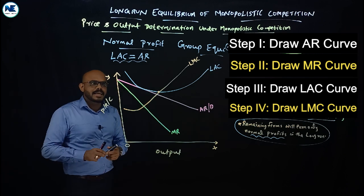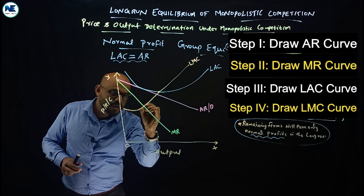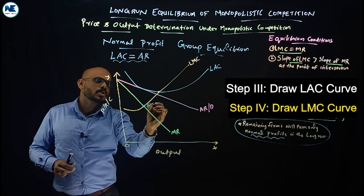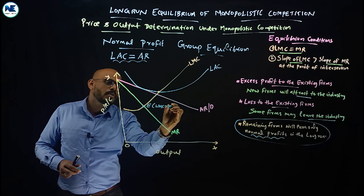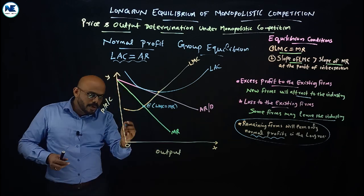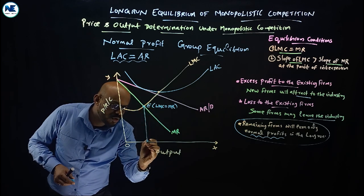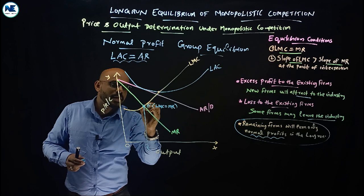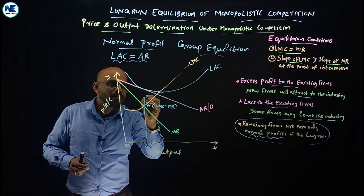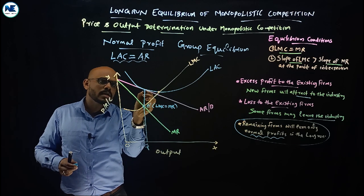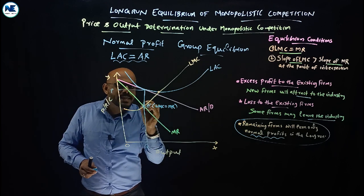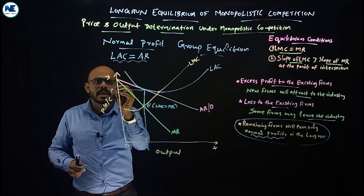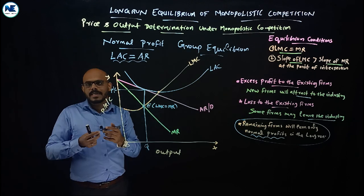The equilibrium condition is where long run marginal cost equals marginal revenue. At that equilibrium position we drop a line to the horizontal axis to get the equilibrium output Q. Then from the equilibrium output we go up to the average revenue curve to get the price. The price is connected to the long run average cost at the same level, giving us price P equal to cost C.